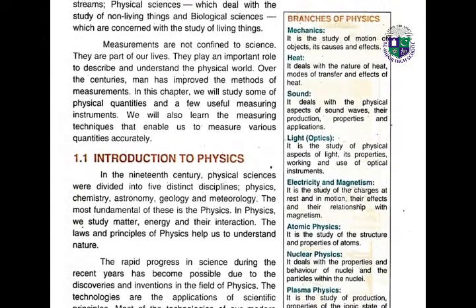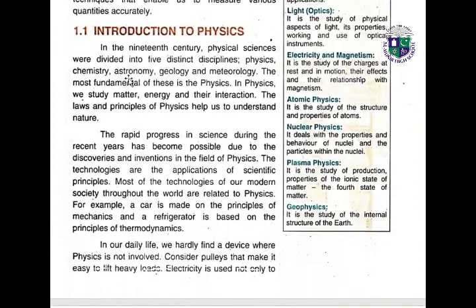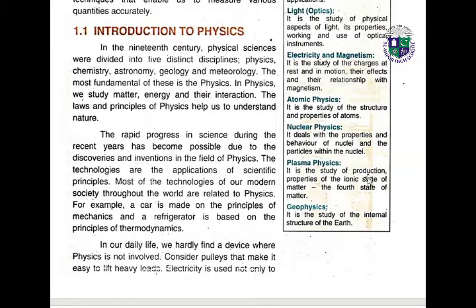The different branches of physics include: Mechanics — the study of motion of objects; Heat — the study of the nature of heat; Sound — which deals with the physical aspects of sound waves, their production, properties, and applications; Light (also called optics) — the study of physical aspects of light, its properties, and use of optical instruments; Electricity and magnetism — the study of charges at rest and in motion, their effects and relationship with magnetism; Atomic physics — related to the study of nature and properties of atoms; Nuclear physics — deals with properties and behavior of nuclei and particles within the nuclei; Plasma physics — the study of production and properties of the ionic state of matter; and Geophysics — the study of the internal structure of the earth.